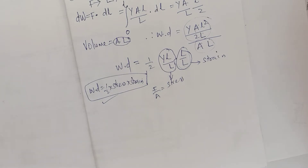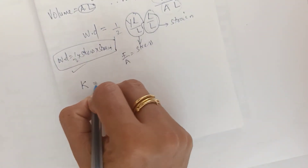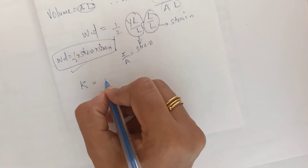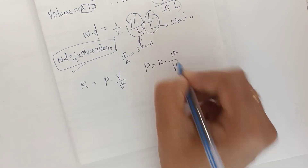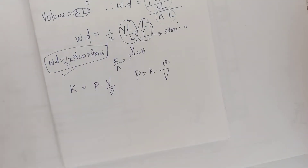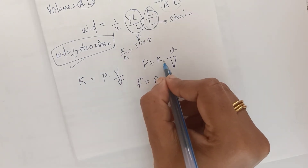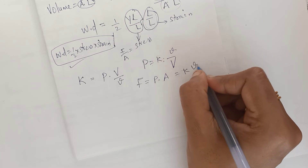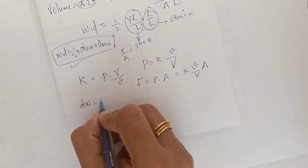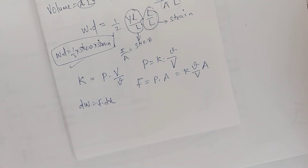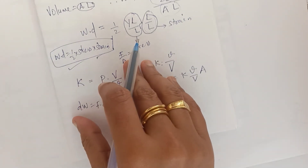In the case of volume strain, instead of length we consider volume V. We have bulk modulus K, and writing P = K × (ΔV/V). The surface area is A and there is a compressive force F = P·A = K·(ΔV/V)·A. The work done is dW = F·dx, and since A·dx is the change in volume, integrating gives work done equal to half stress times strain, the same result.